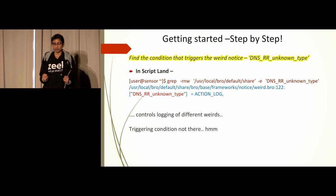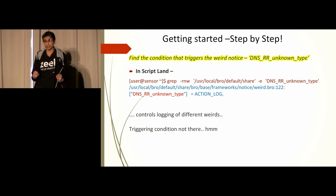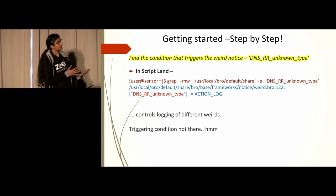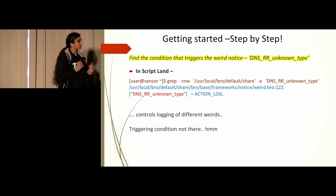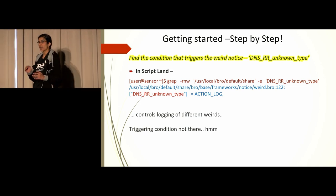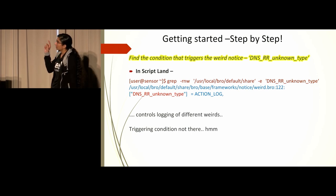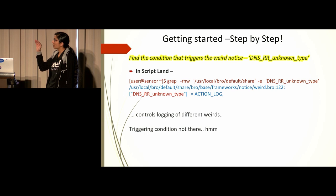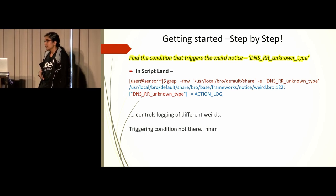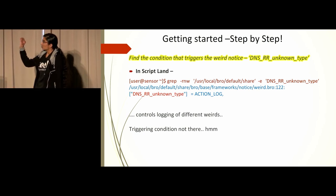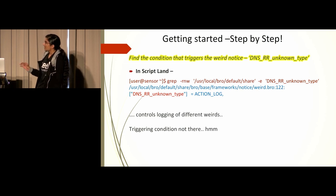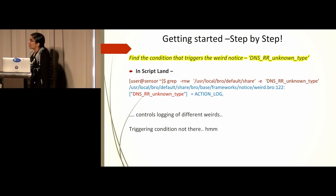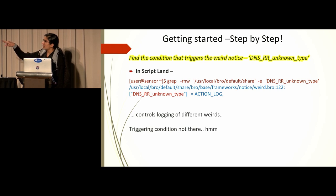To get started finding the condition, we knew there are two places to look. First, the script land — running a grep for the string 'DNS_error_unknown_type' recursively in the share folder where all scripts live. Running that command gave a hit on line 122 in weird.bro in the base/framework/notice folder. The line contains a table of string with some value — it doesn't look like it has the triggering condition, but it's worth taking a look.